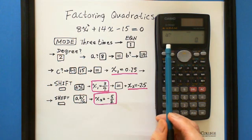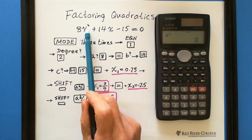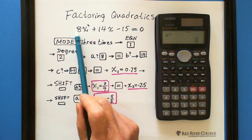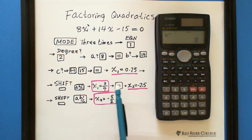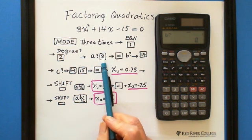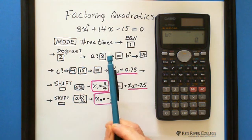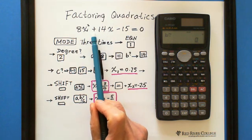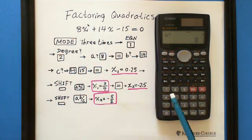It asks you what is A. The A is the coefficient of x squared, which is 8. We enter 8 and hit the equal sign. Then it asks what is B. The B is the coefficient of x, which is 14, which is positive. Enter 14.